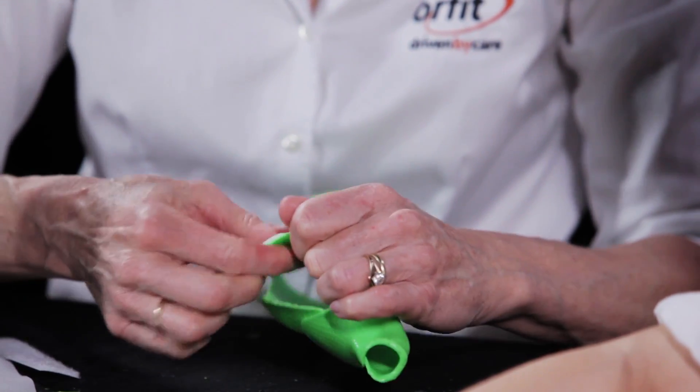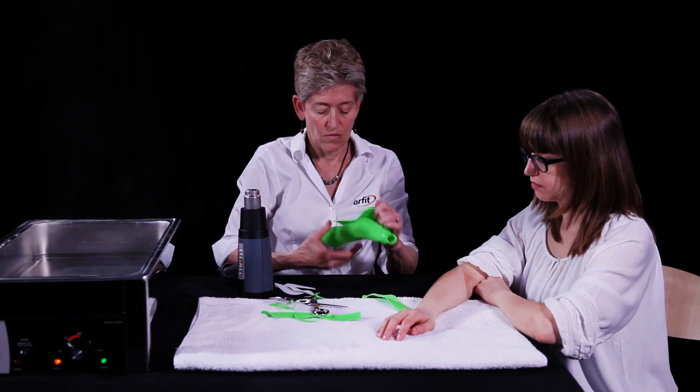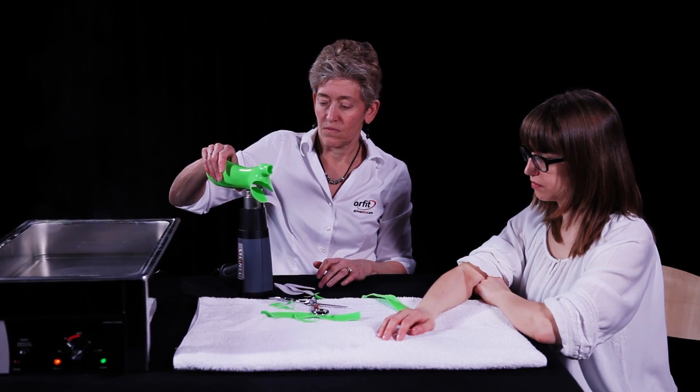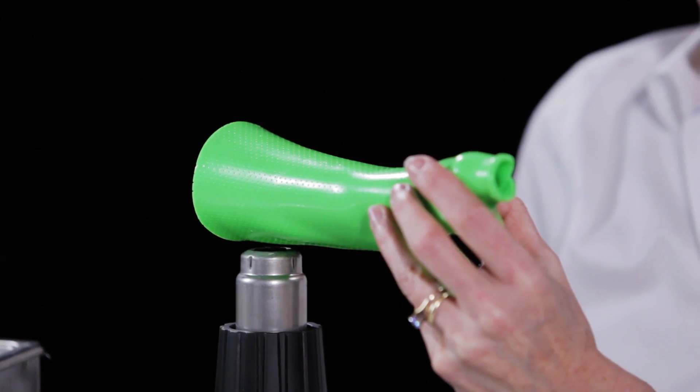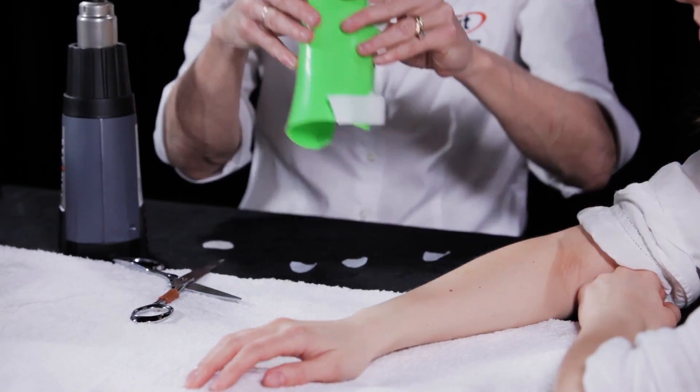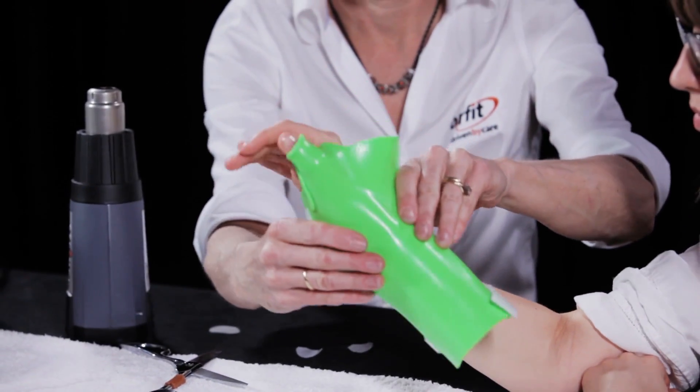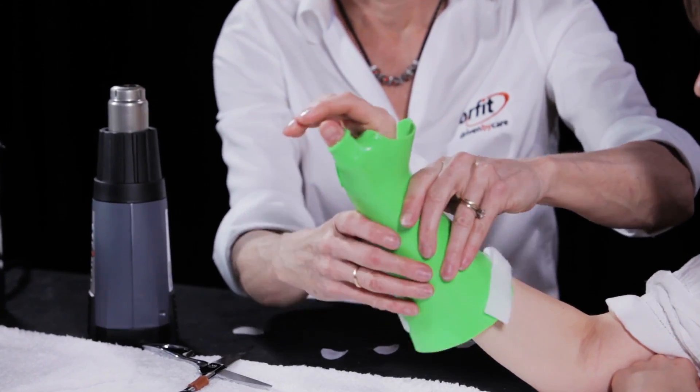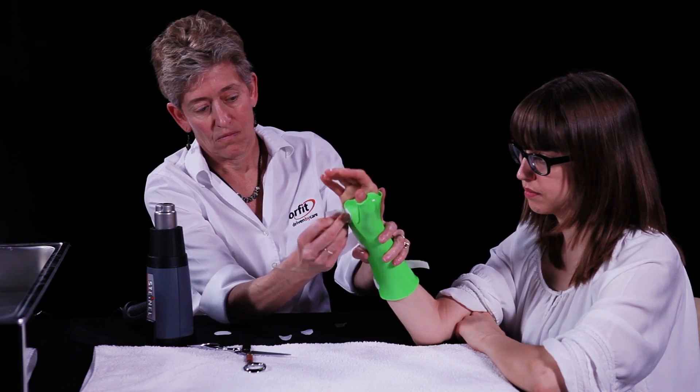Firmly press the Velcro loop strap into the heated thermoplastic. Repeat for the two additional straps. Apply adhesive backed Velcro hook on the opposite side of the orthosis. Make sure this hook stays in place by dry heating this adhesive and also by dry heating the thermoplastic material.